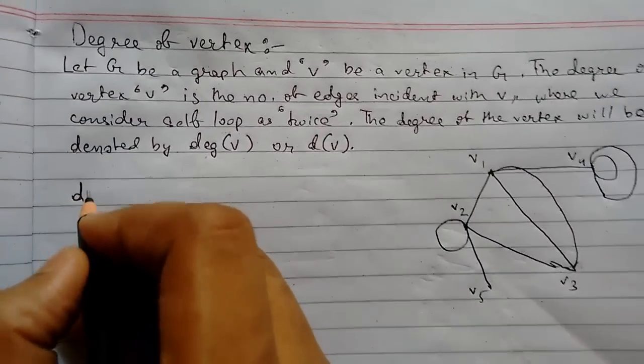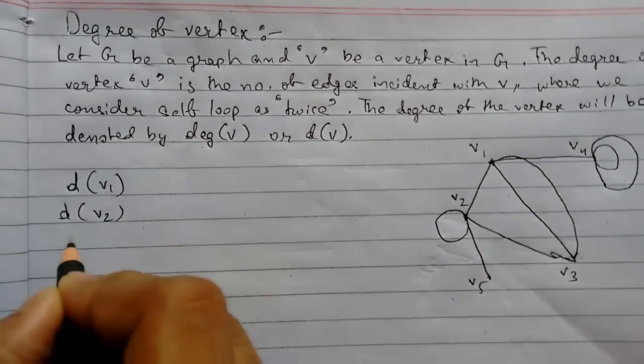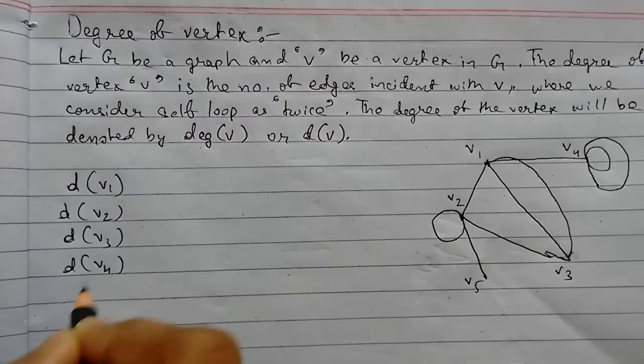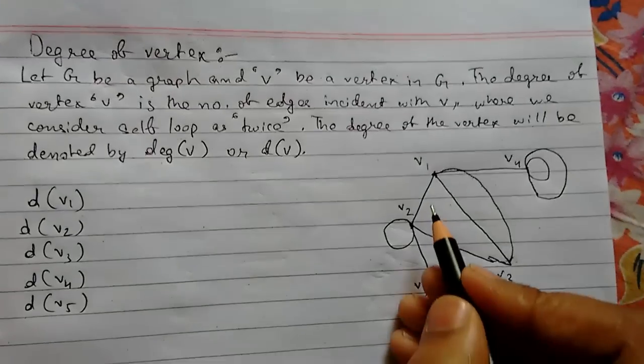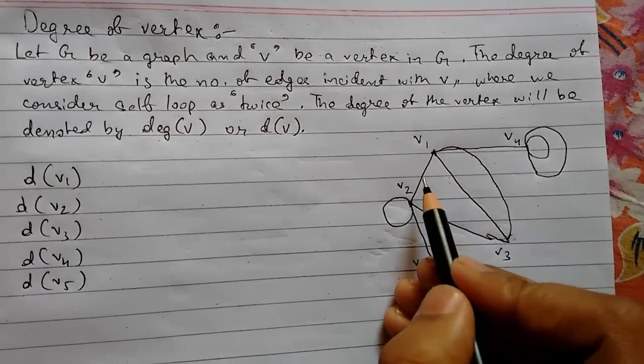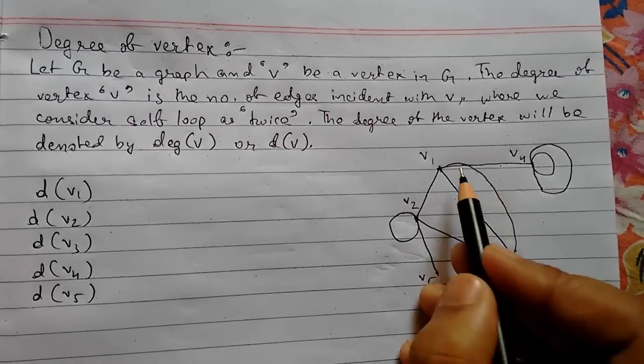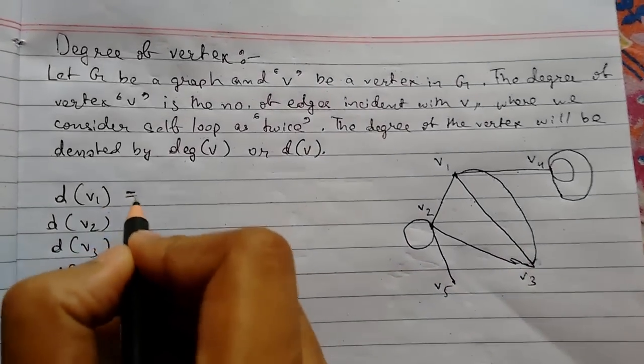So first let us now start looking at the degree of each vertices. So first let us look at degree of vertex V1, degree of vertex V2, vertex V3, 4 and 5. So for vertex V1, first now we will see how many edges are incident to it. So here we see that 1, 2, 3 and 4. 4 edges are incident on it. So we can say that the degree will be 4.